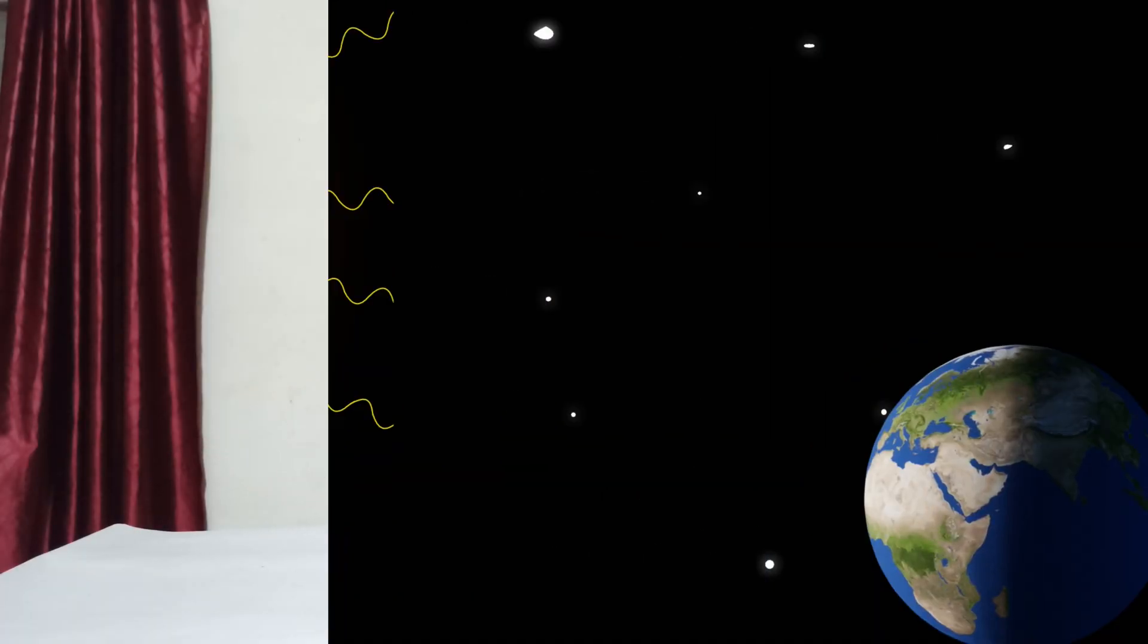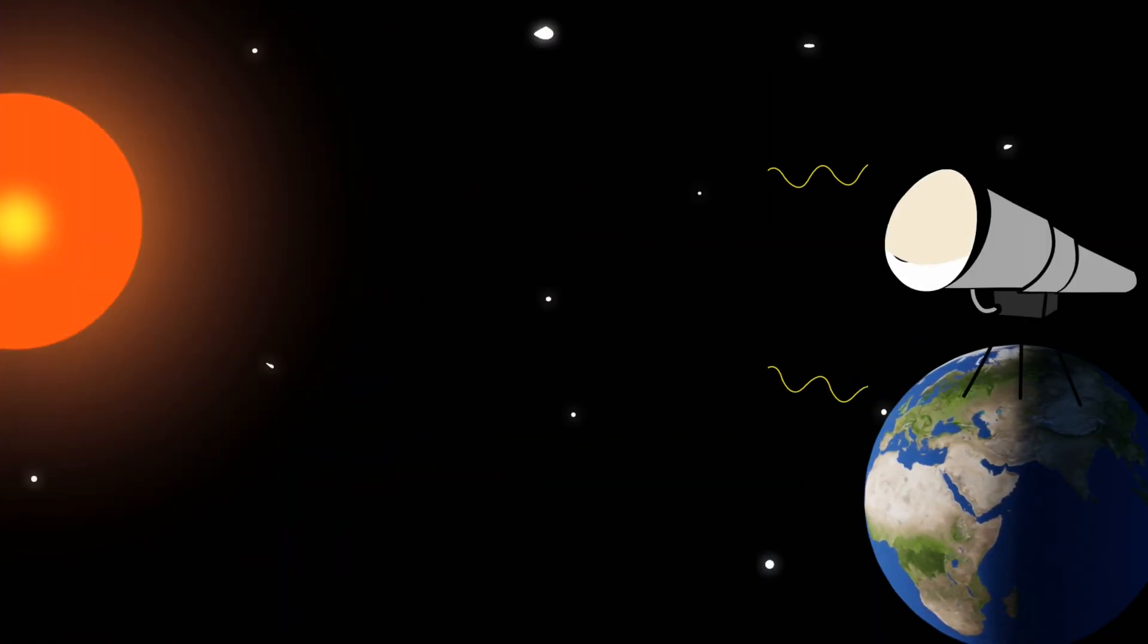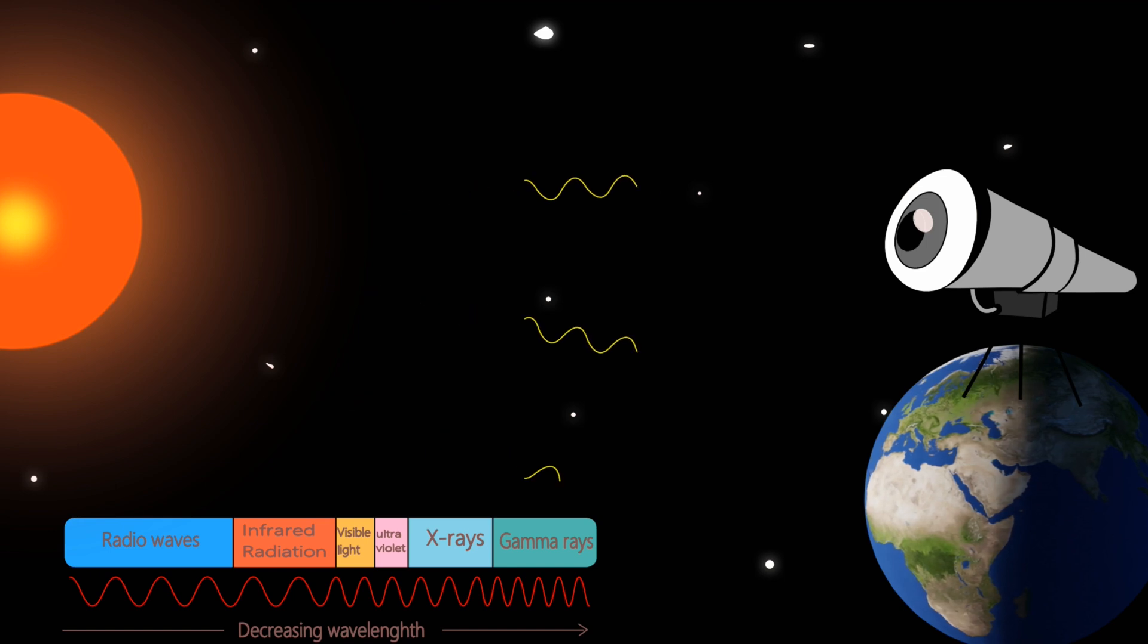How do we study the universe? Well, we use telescopes, right? We search for electromagnetic waves like radio waves and gamma rays emitted from stars and galaxies and learn about them.